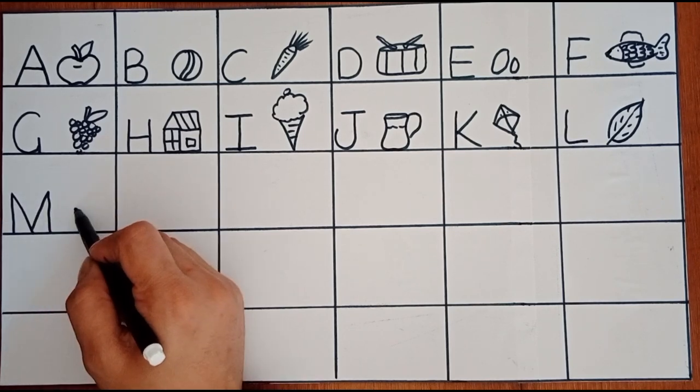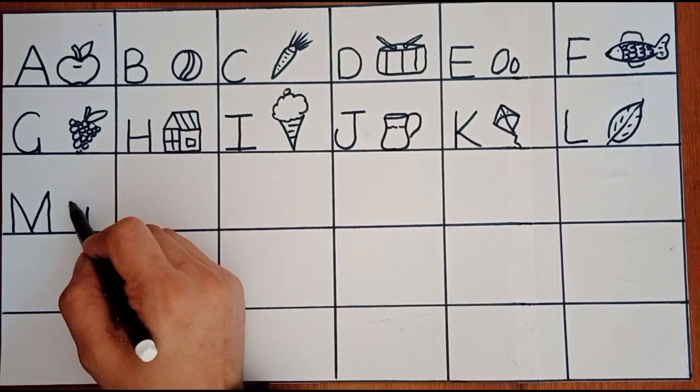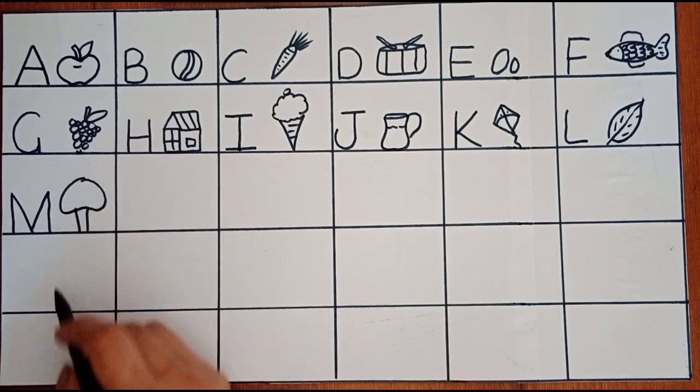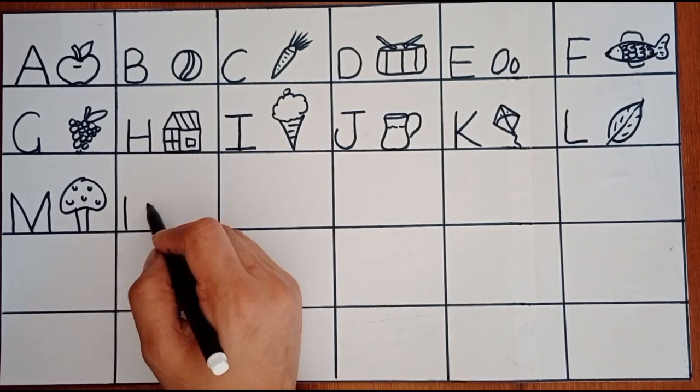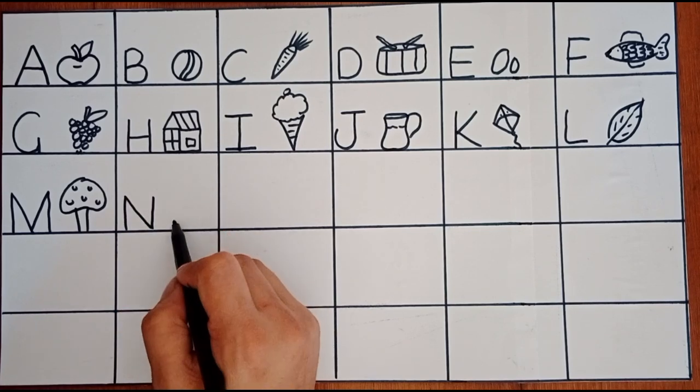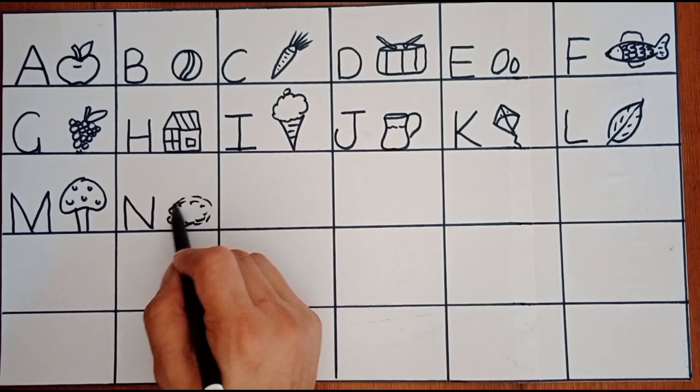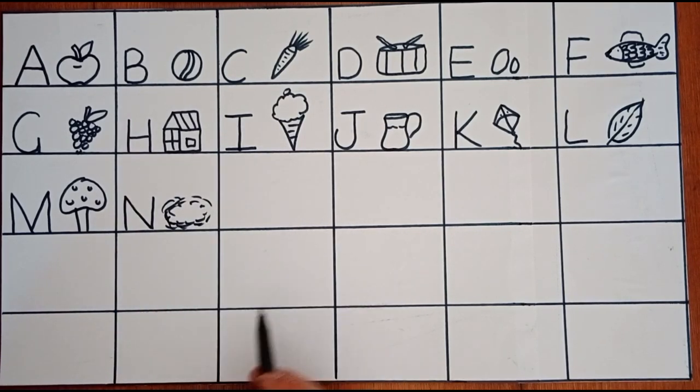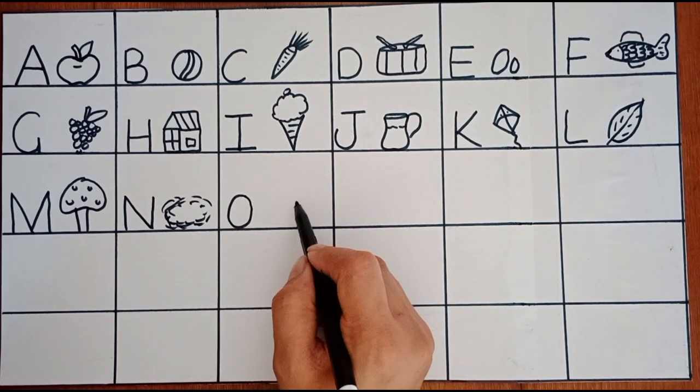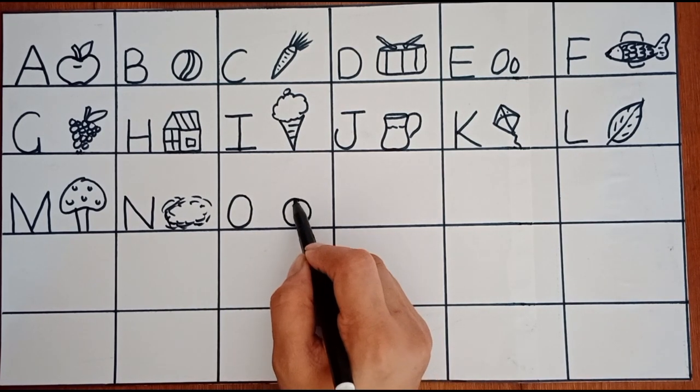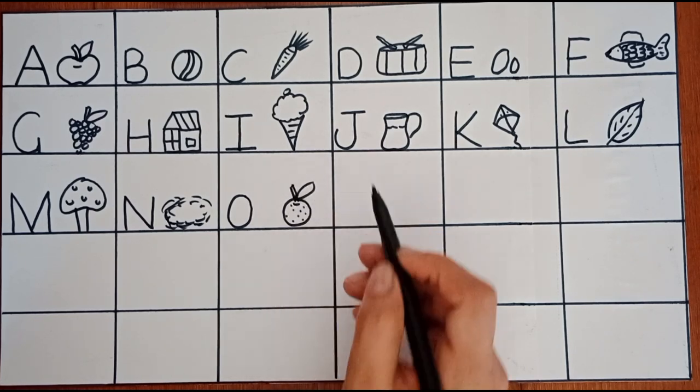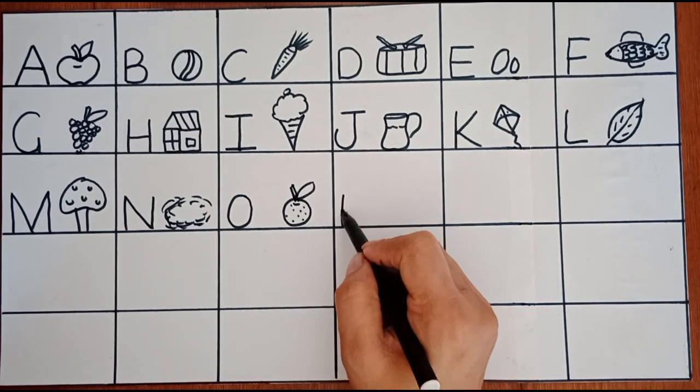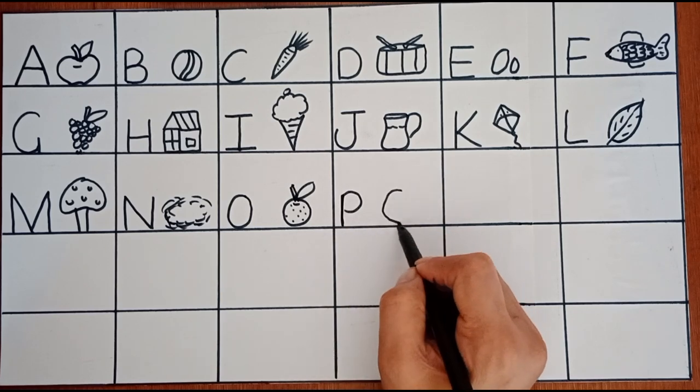M, M for mushroom. N, N for nest. O, O for orange. P, P for pumpkin.